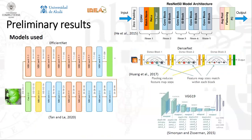To answer our two research questions, we used state-of-the-art computer vision models that excel at image classification. To overcome the pitfalls of a relatively small sample, we used transfer learning models to get the benefits of already trained models when it comes to feature detection and image processing. These models are EfficientNet, ResNet, DenseNet, and VGG19. We won't be going through the inner architecture of these models in this presentation, but further information is located in the original papers.